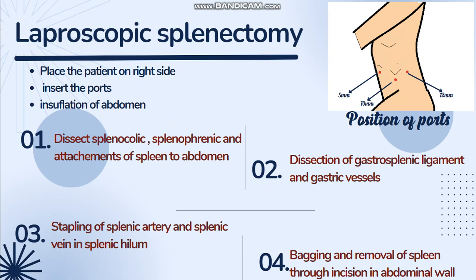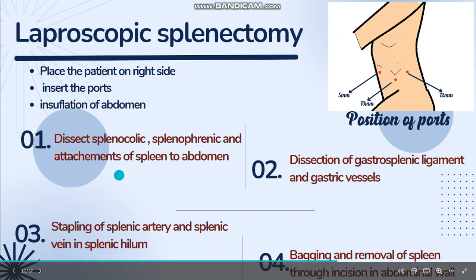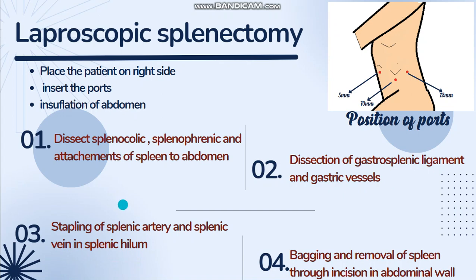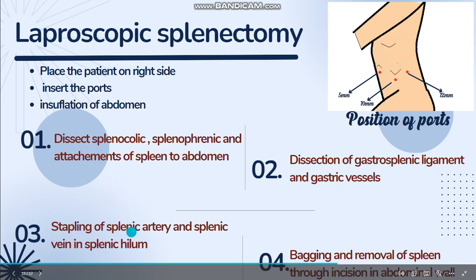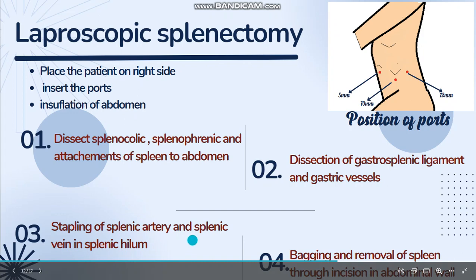Next, we will dissect the splenocolic ligament to free the lower pole of the spleen, and the splenophrenic ligament to free the spleen from the diaphragm. The other attachments of the spleen to the abdomen are also dissected. Then we will dissect the gastrosplenic ligament, which contains the short gastric vessels, and ligate these gastric vessels. In the next step, we will dissect and ligate the splenic artery and splenic vein at the splenic hilum.